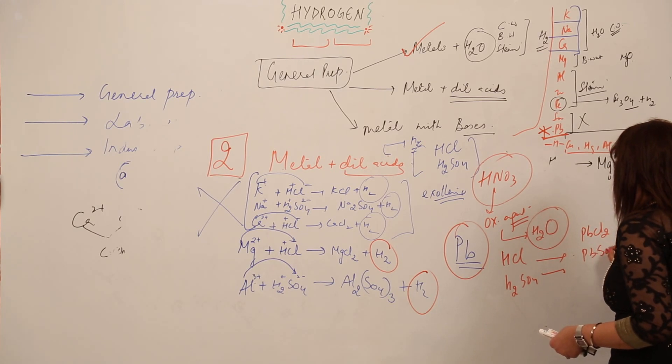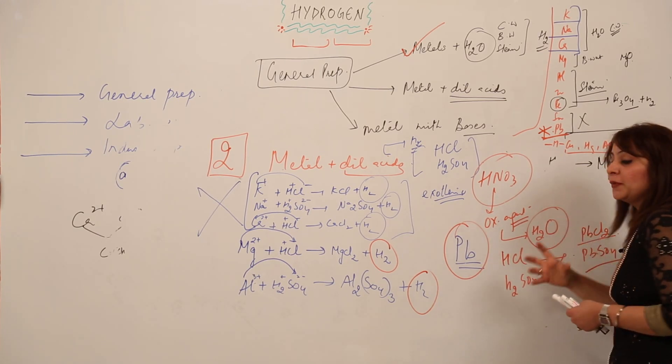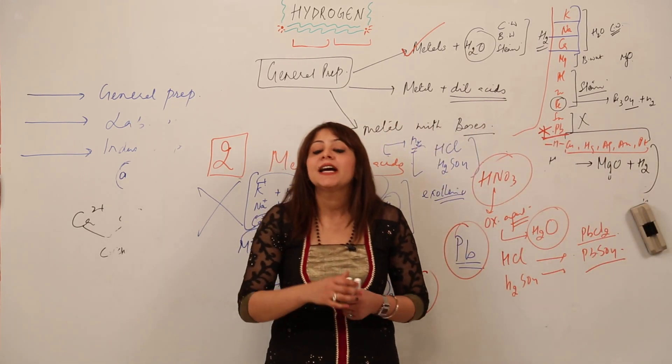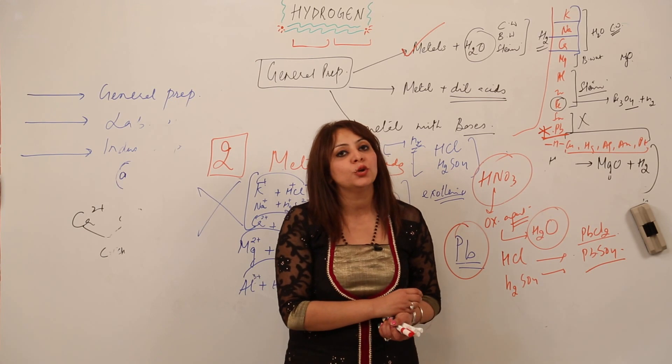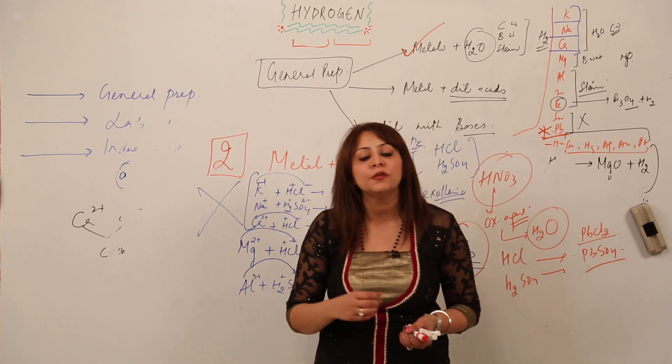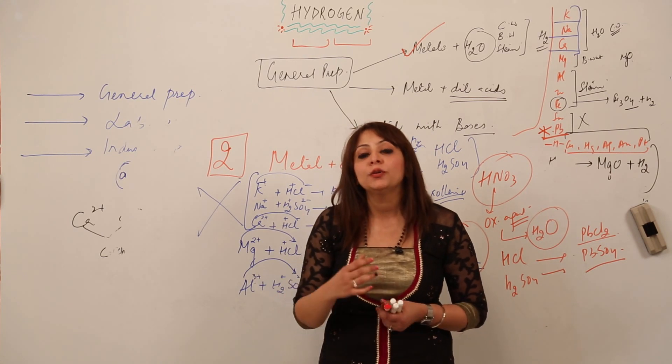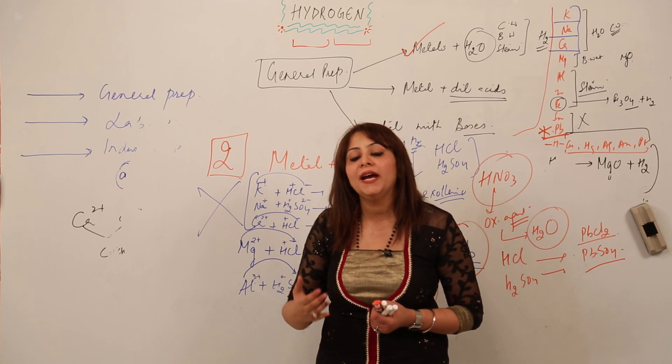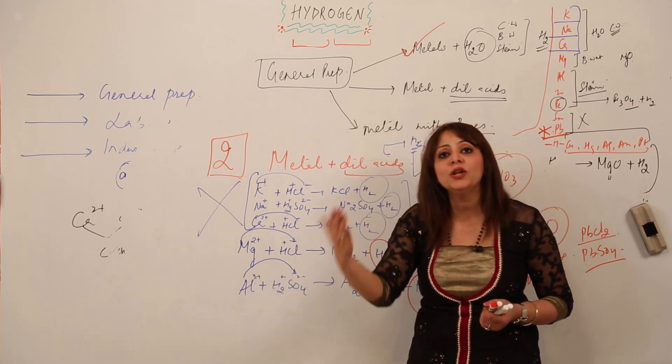What is the problem that we cannot use lead? The problem is that though it reacts with hydrochloric acid to form chloride and though it reacts with sulfuric acid to form sulfate, the limitation is that when it forms lead chloride and lead sulfate, it starts forming a thin covering on the surface of the lead.